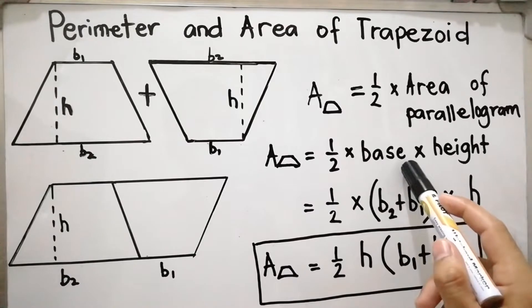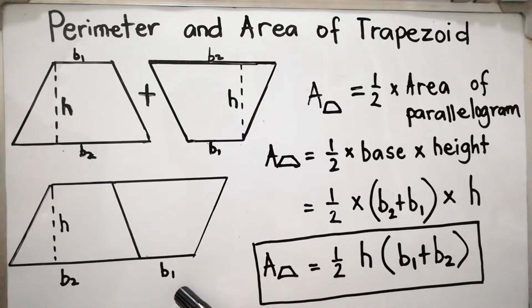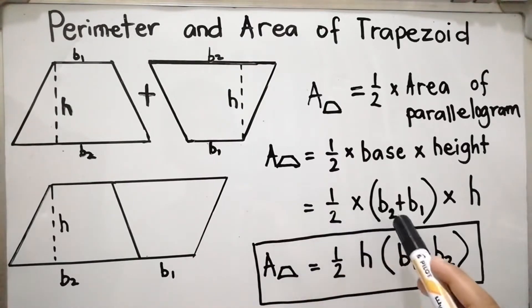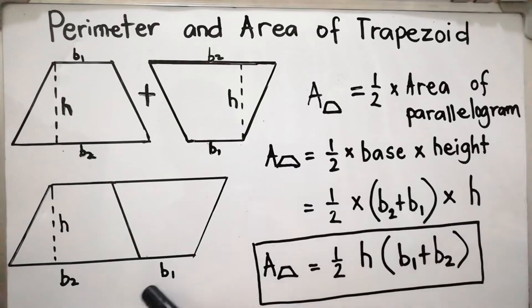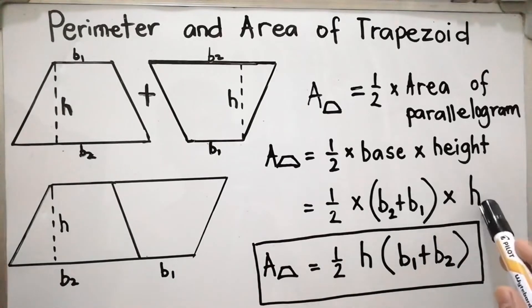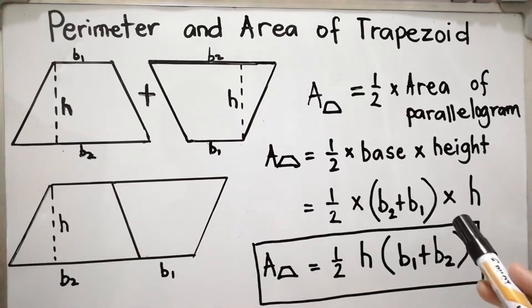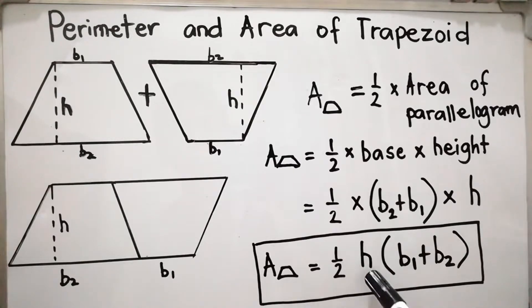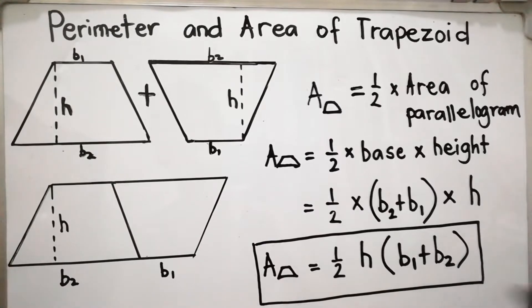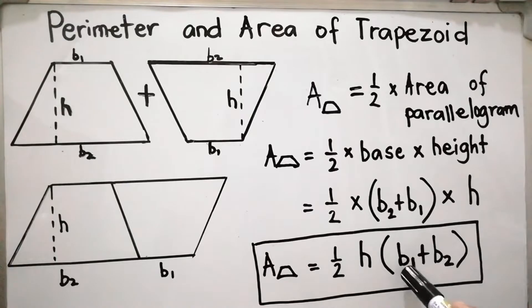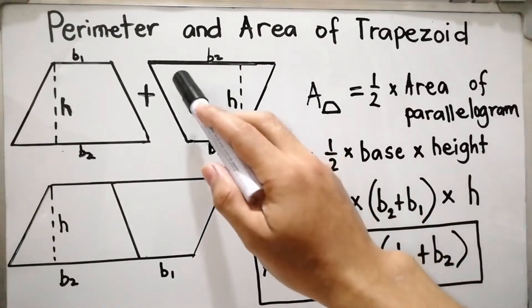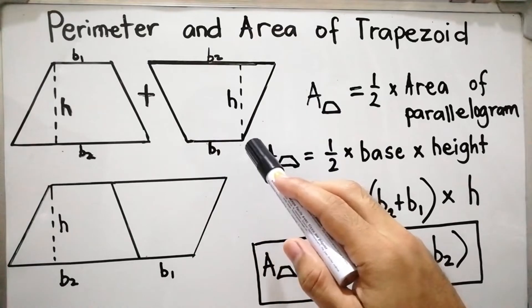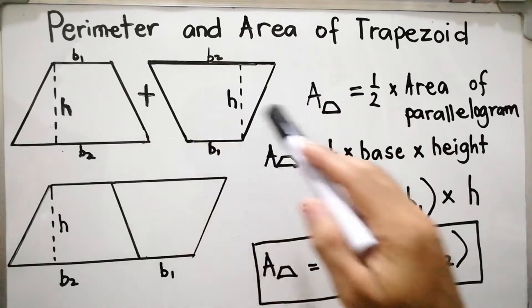The base of the parallelogram is the sum of two different measures — the bases of the trapezoids. So that is one-half times the quantity of B sub 2 plus B sub 1, times height. The final formula for the area of the trapezoid is one-half times height times the quantity of B sub 1 plus B sub 2, or the sum of the two bases. Note that B sub 1 and B sub 2 are the parallel sides of the trapezoid — the slant side and its opposite are not the bases.